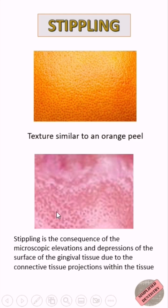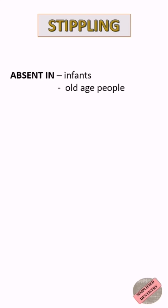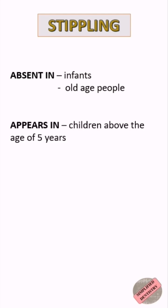Stippling is the consequence of microscopic elevations and depressions of the surface of the gingival tissue, due to connective tissue projections within the tissue. Stippling is absent in infants and in old age, and it appears in children above the age of five years.